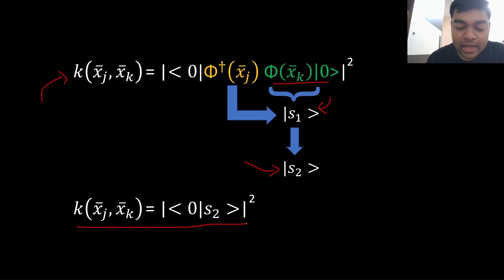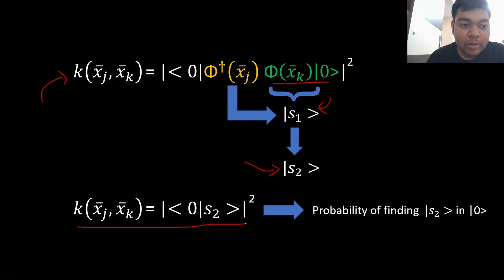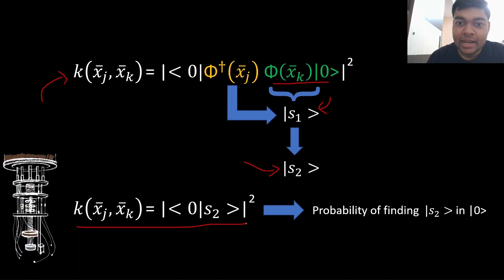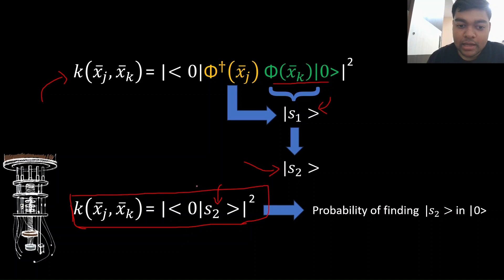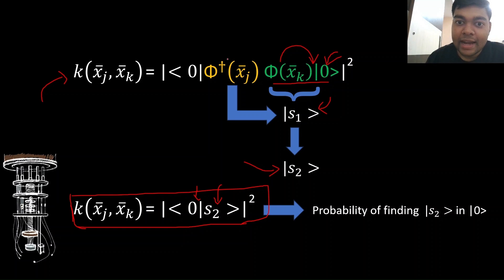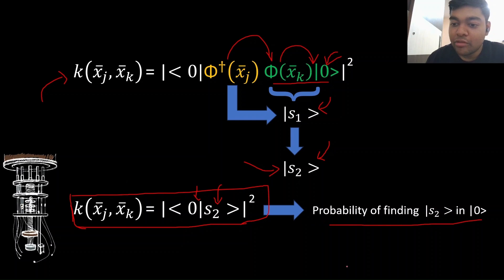If you look at this carefully, what this actually symbolizes is just the probability of finding s2 in |0⟩. Remember, our quantum computer was good at giving probabilities, and so this is what we are using. This definition of the kernel function says: what is the probability of finding state s2 as state |0⟩? To summarize: we have initial state |0⟩, we execute the first circuit on |0⟩ to get state s1, then execute circuit Phi-dagger to get state s2. The kernel function is nothing but the probability of finding s2 as |0⟩. And that's what quantum support vector machines are essentially.